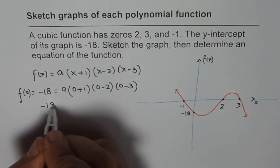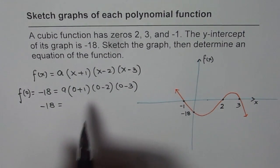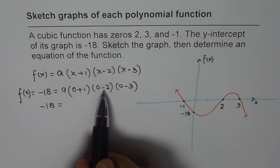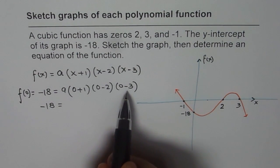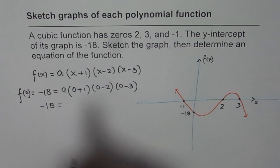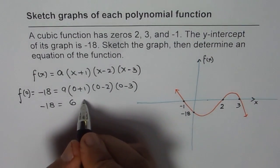So, minus 18 is equals to how much? Minus 2 times minus 3 gives you plus 6. Correct? So, we have 6A, right?